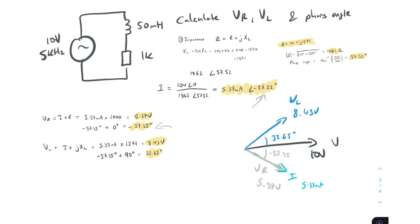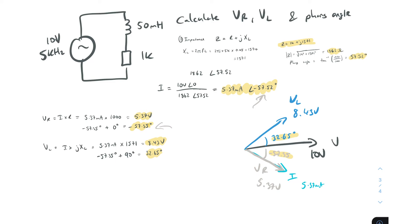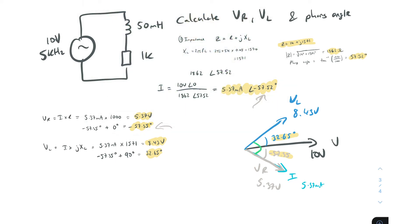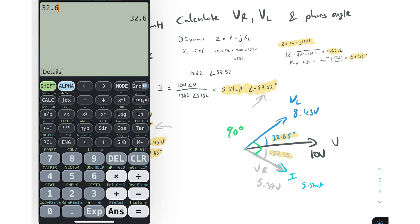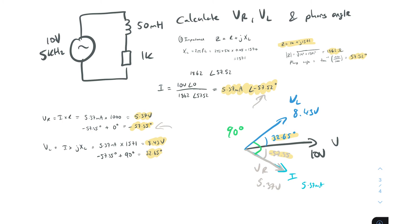The VR angle of −57.35° and the VL angle of +32.65° add together: 57.35 + 32.65 = 90°, confirming the 90° relationship between the resistor and inductor voltages. The overall circuit phase angle is the current phase angle of −57.52°.